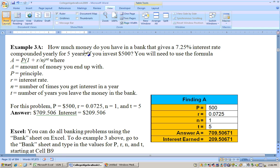This one says, how much money do you have in a bank that gives a 7.25% interest rate compounded yearly for 5 years if you invest $500? It says you will need to use this formula right here. A equals P times 1 plus R over N to the NT.